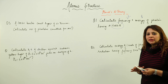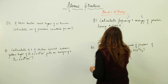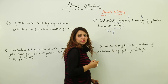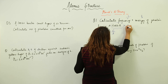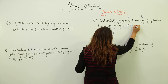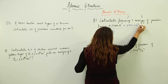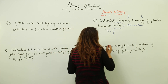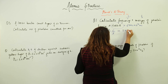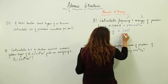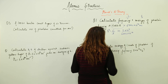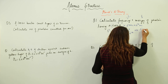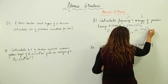We are provided with the wavelength. To find the frequency, we use the relation ν = c/λ. Converting lambda into meters: 6000 × 10⁻¹⁰ meters. Putting in values, c = 3 × 10⁸ m/s divided by 6000 × 10⁻¹⁰, we get ν = 5 × 10¹⁴ Hz.